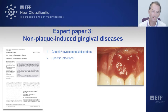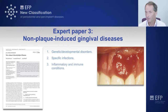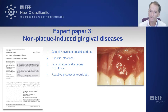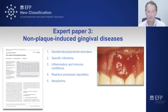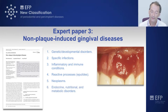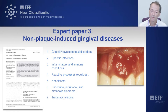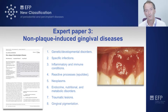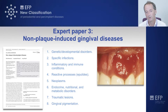The eight categories are: genetic or developmental disorders; specific infections; inflammatory and immune conditions that manifest within the gingival tissues; reactive processes such as the epulides; neoplasms, both benign and malignant; endocrine, nutritional and metabolic conditions; traumatic lesions; and various forms of gingival pigmentation, whether drug-induced or induced by other exposures that can cause pigmentation of the gingival tissues.